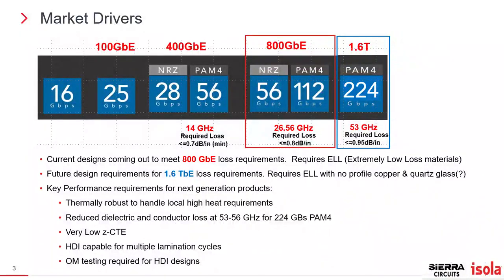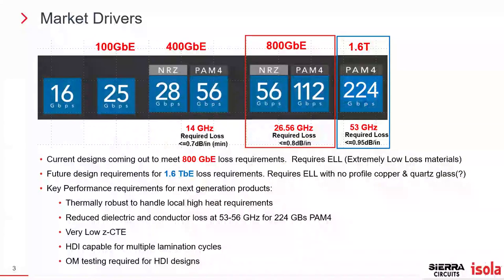With the future design requirements, you're going to need an extremely low loss resin system, no-profile copper — which means no nodulation on the copper — and probably something like quartz glass or another type of reinforcement that hasn't been worked on very much yet. You're going to need thermally robust products, reduced dielectric and conductor losses, very low CTE, HDI capability as density continues to get finer and finer, and these things have to go through OEM testing for HDI designs.